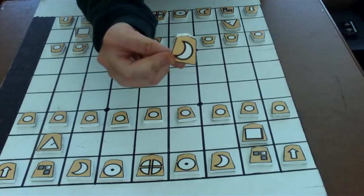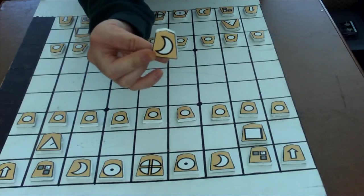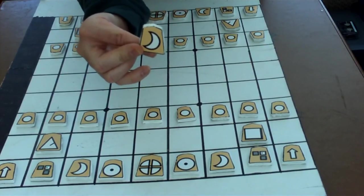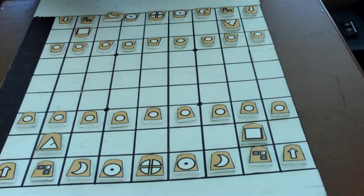Silver general, here represented by a crescent moon, because the crescent moon is the alchemical symbol for silver. It moves one space diagonally or one space forward.